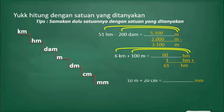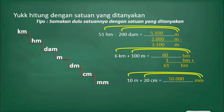Bisa semua. Contoh yang ketiga: 10 meter ditambah 20 cm sama dengan berapa milimeter? Langkah pertama, kita ubah 10 meter berapa milimeter. Karena dikalikan dengan 1.000, berarti hasilnya adalah 10.000 milimeter. Kemudian yang kedua, 20 cm berapa milimeter? Dari cm ke milimeter turun 1 tangga, berarti dikalikan dengan 10. 20 dikalikan dengan 10 hasilnya adalah 200. Kalau sudah ketemu, kita jumlahkan: 10.000 ditambah 200 hasilnya adalah 10.200 milimeter. Mudah sekali kan?